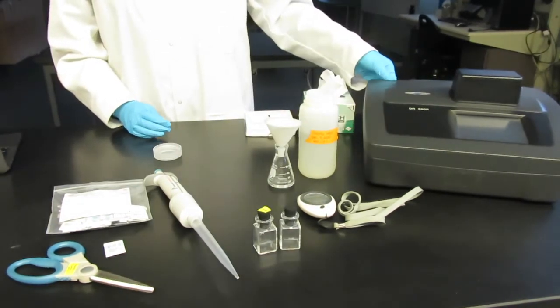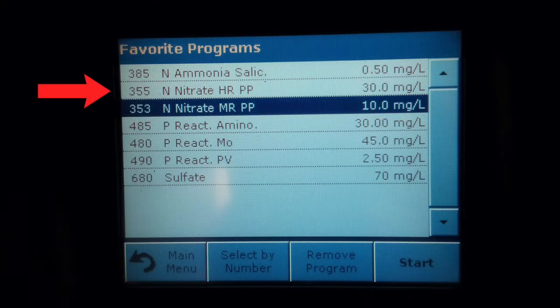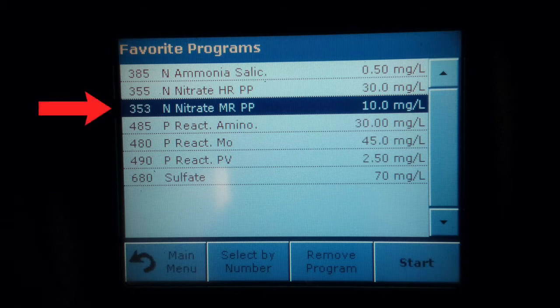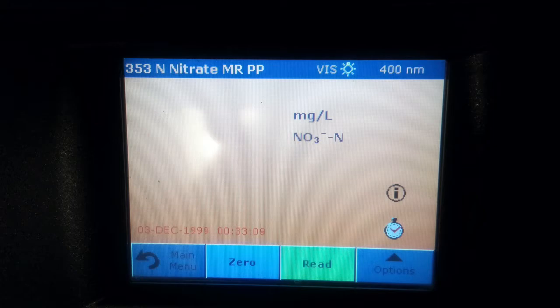Turn on the spectrophotometer, select stored programs and choose number 355 N Nitrate High Range PP for the high range program, or if you know you sampled in an area with lower nitrates you can select program 353 N Nitrate Medium Range for the mid range program. This will allow the spectrophotometer to warm up.